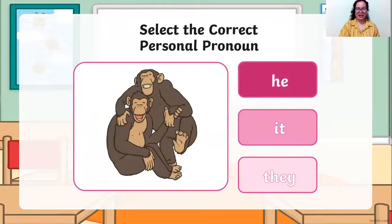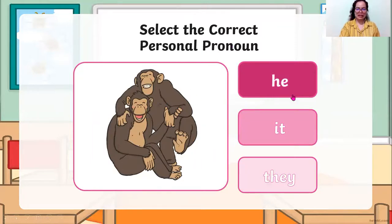Next. Monkeys — how many monkeys? There are two monkeys. So what personal pronoun are we going to use? He, it, or they? We are going to use they — they are monkeys.